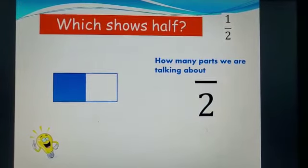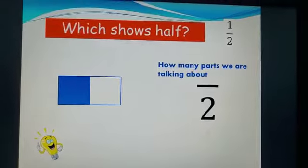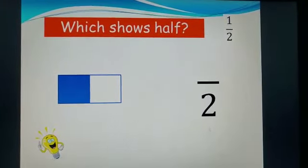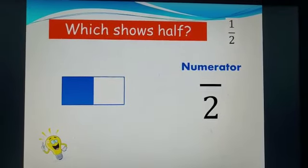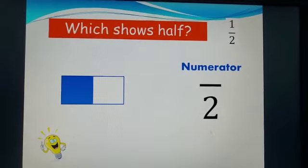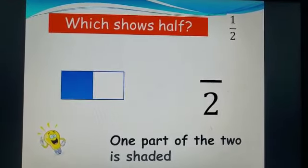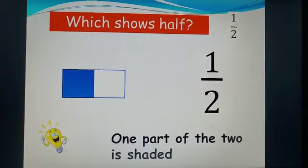Now our top number shows how many parts we are talking about. We're talking about the shaded part, or as we call it, our numerator. Let's count how many parts are shaded. One part of the two is shaded. This represents a half.